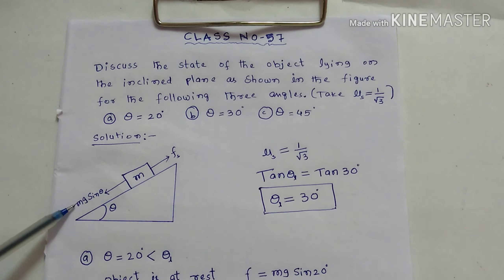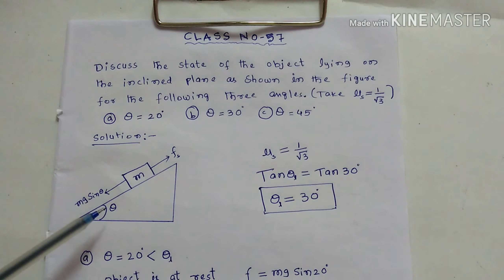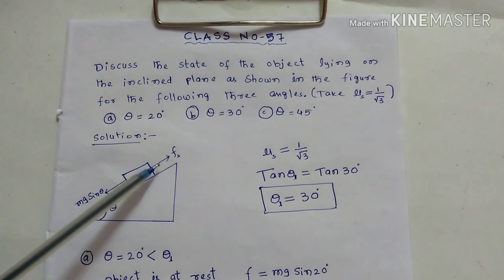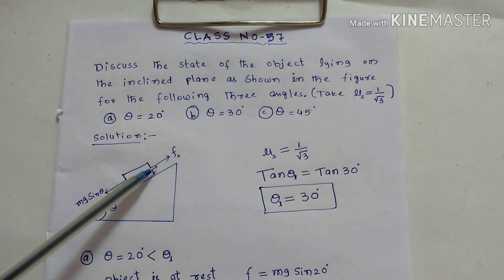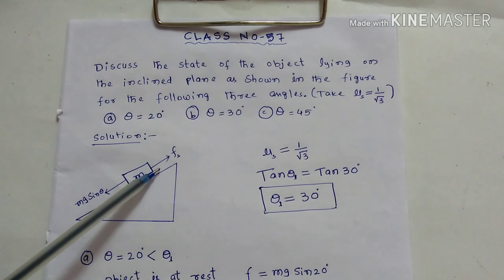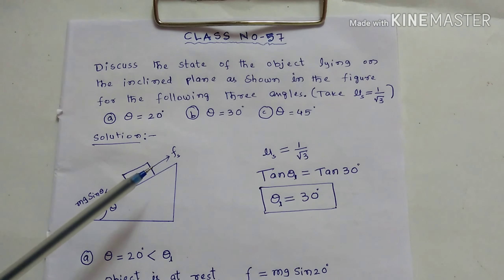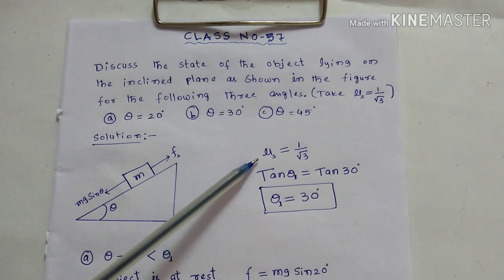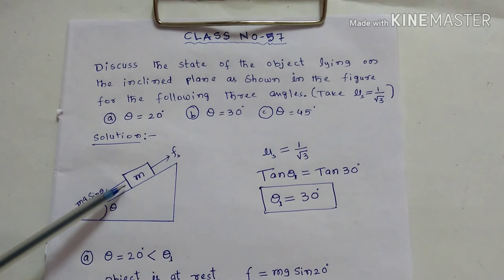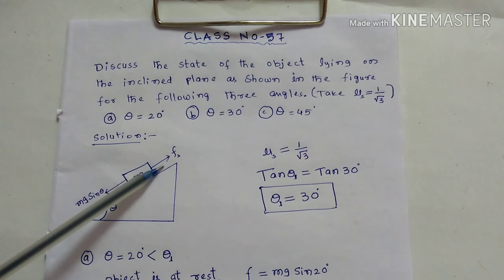The downward force Mg sin theta changes with theta. As theta increases, Mg sin theta increases. But the force of static friction will also increase, up to its maximum value Fs maximum, that is mu s into N, where mu s is the coefficient of static friction. If Mg sin theta goes beyond that maximum, then it will move along this direction.